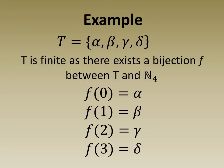For example, the set t defined extensionally here is finite as there exists a bijection f between t and n sub 4 defined below.